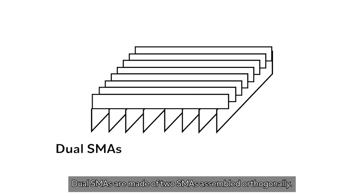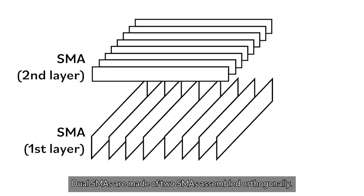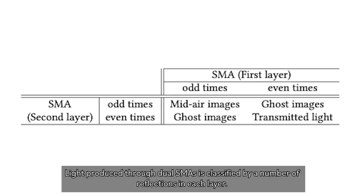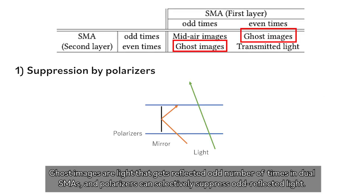Dual-SMS are made of two SMS assembled in a zogon ring. Light produced through dual-SMS is classified by the number of reflections in each layer. Ghost images are light that gets reflected an odd number of times in dual-SMS.